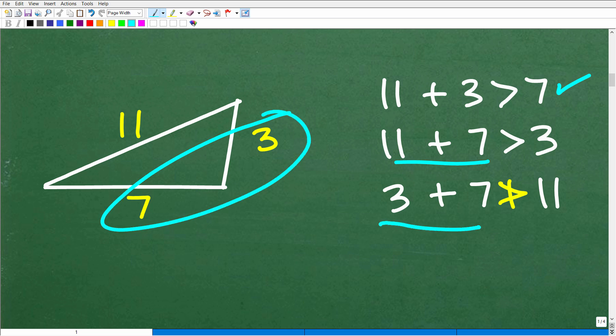But when we check these two sides, seven and three, is that greater than this side? No, right? So seven plus three or three plus seven, that is 10. 10 is not greater than 11. So this fails right here, okay? So this is not a triangle.